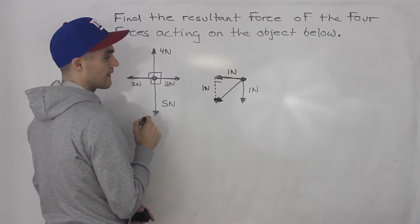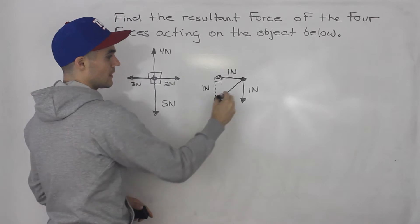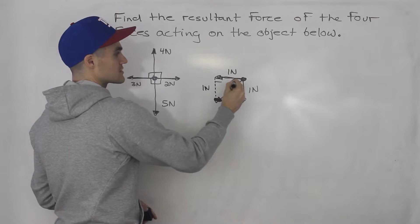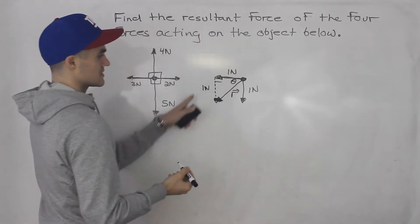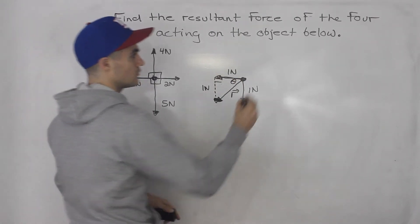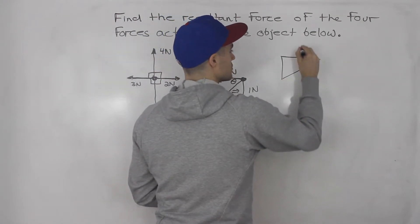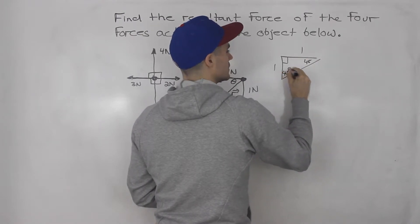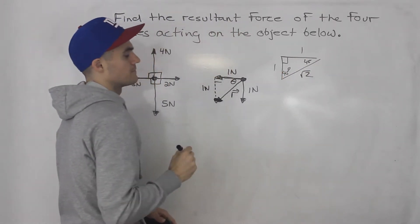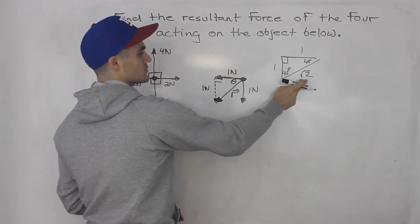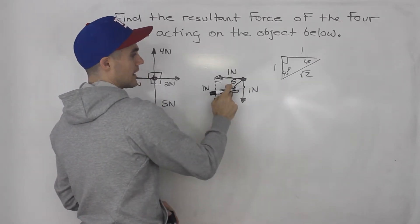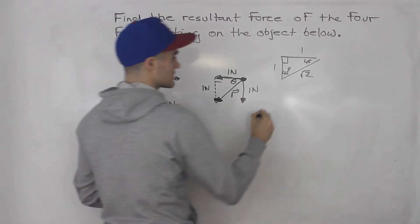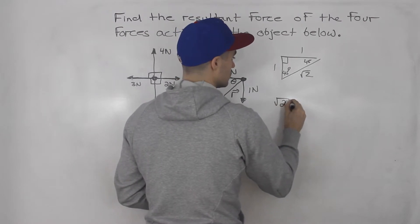So we can find out what this resultant vector is going to be. We can also find out its direction to solve for that theta. And notice this is one and one. So this is 45 degrees, 45 degrees, and this is root two. If you do Pythagoras theorem on that, you would get root two for the magnitude of that resultant. And this is 45 degrees here. So the resultant force is going to be root two newtons.